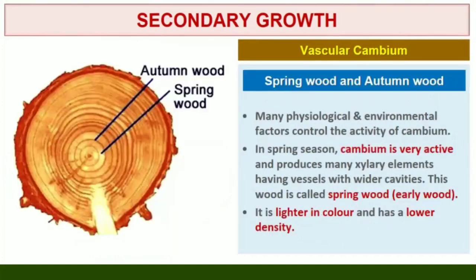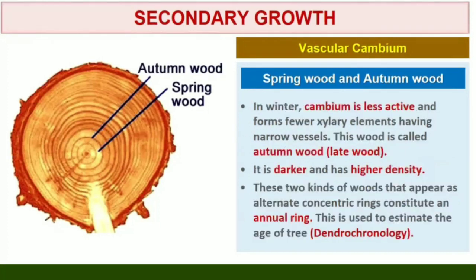Springwood and Autumnwood. The activity of cambium is under the control of many physiological and environmental factors. In temperate regions, the climatic conditions are not uniform through the year. In spring, cambium is very active and produces a large number of xylary elements having vessels with wider cavities. The wood formed during this season is called Springwood or Early Wood. In winter, the cambium is less active and forms fewer xylary elements with narrow vessels; this wood is called Autumnwood or Late Wood. Springwood is lighter in color and has lower density, whereas Autumnwood is darker and has higher density. The two kinds of woods that appear as alternate concentric rings constitute an annual ring. Annual rings seen in a cut stem give an estimate of the age of the tree.